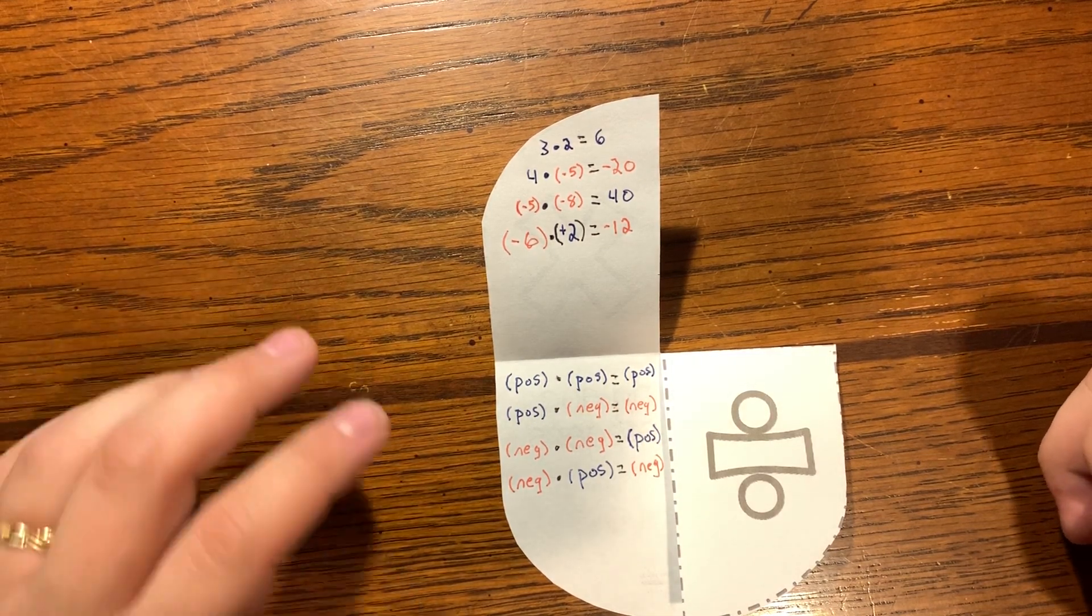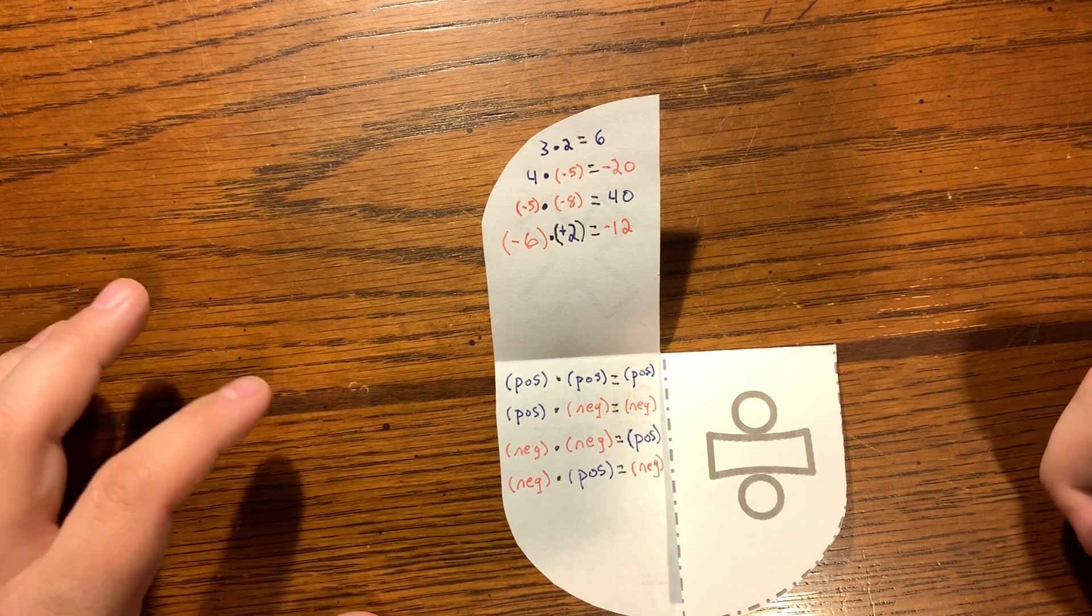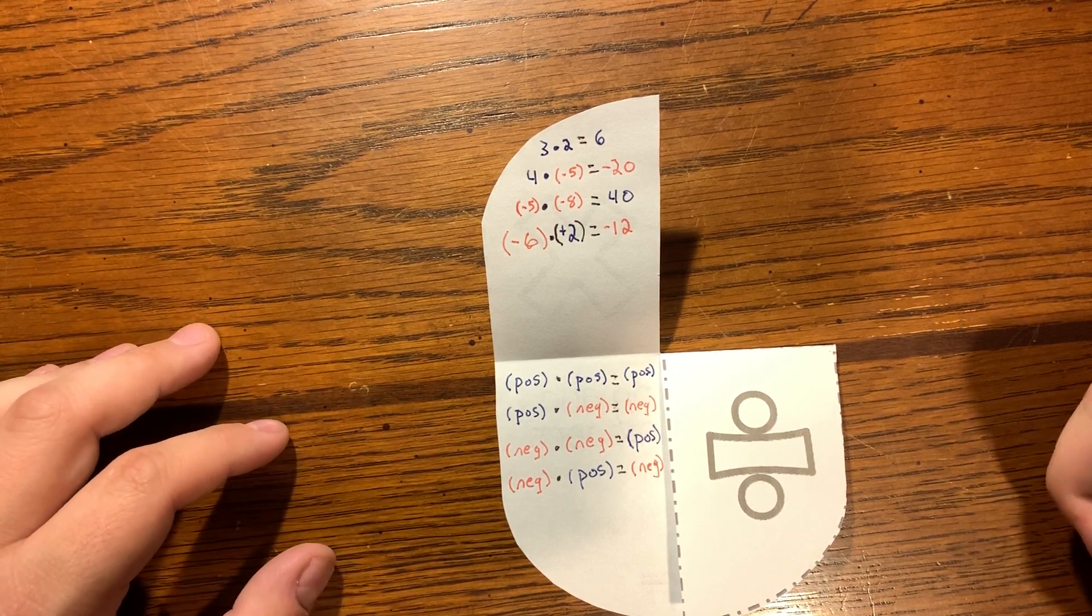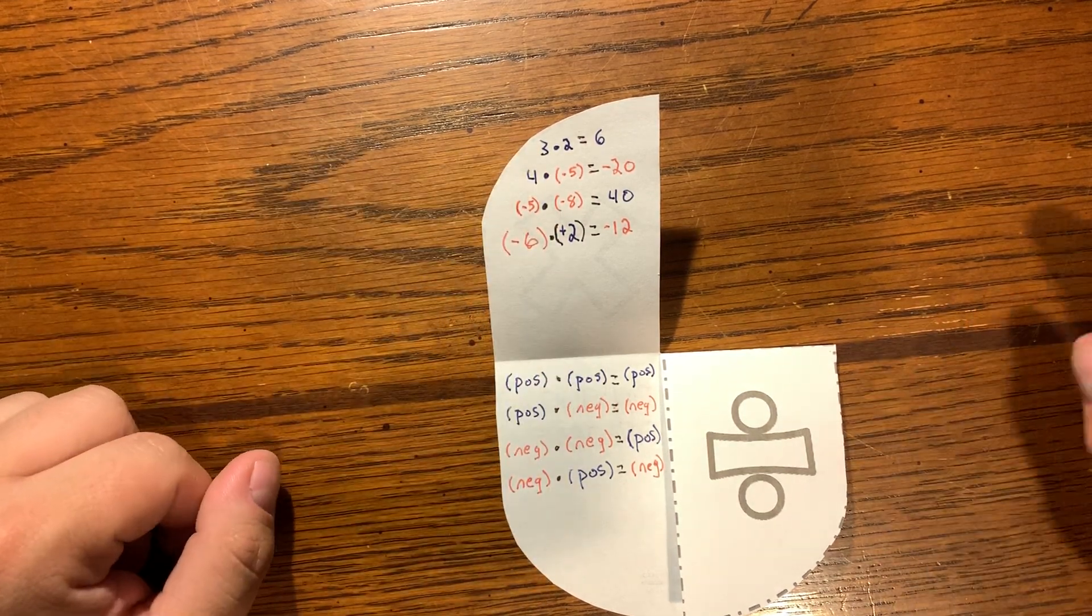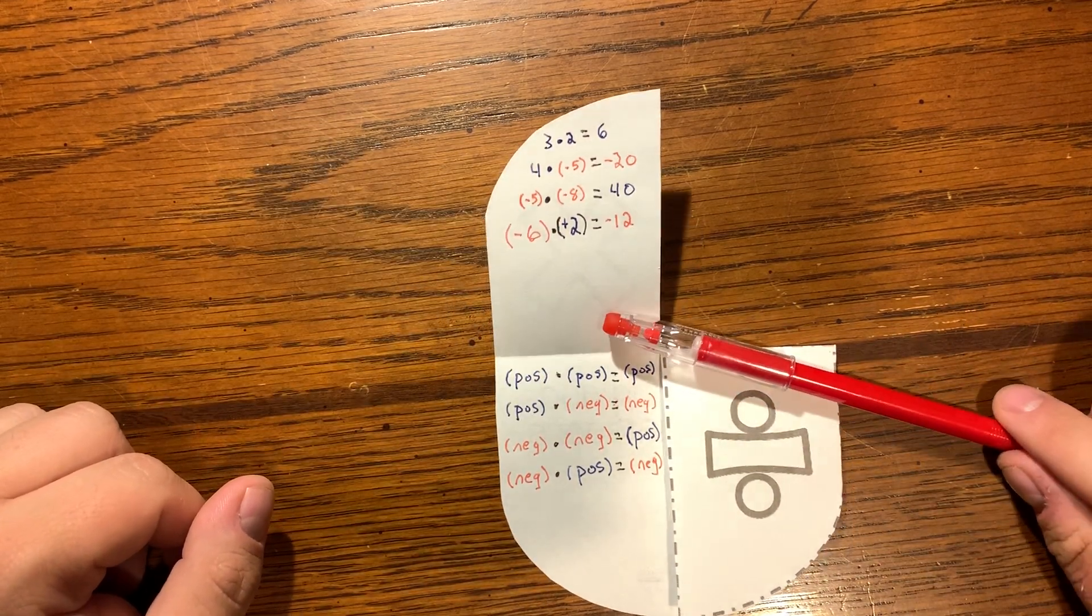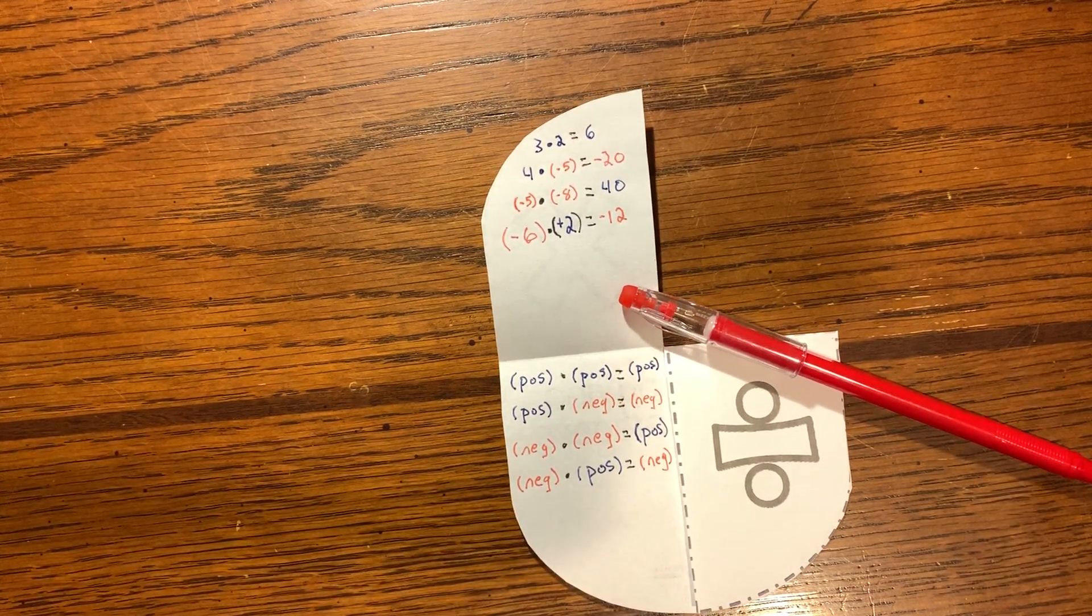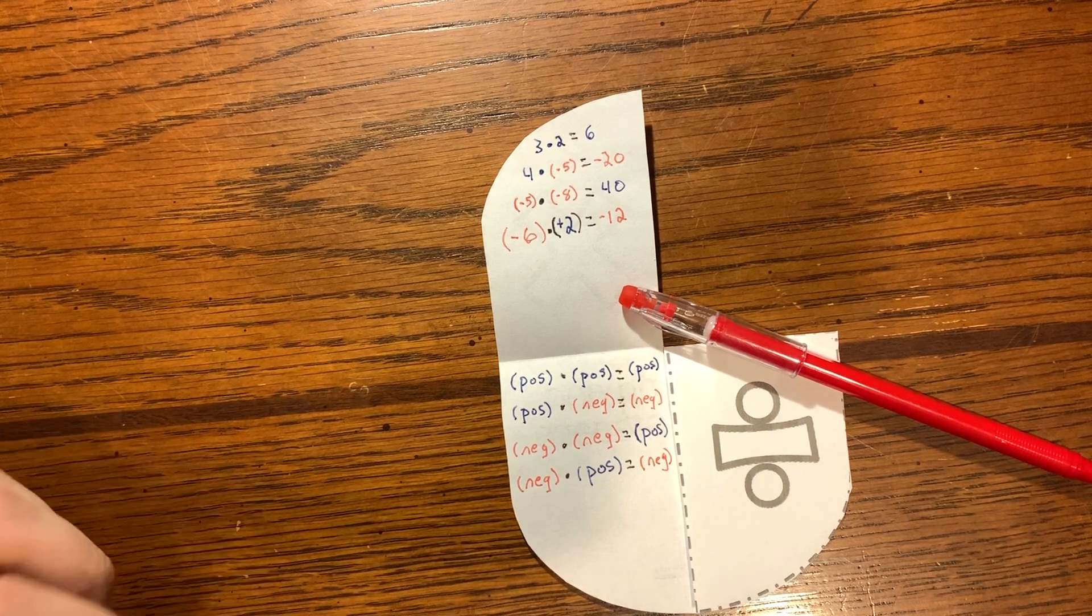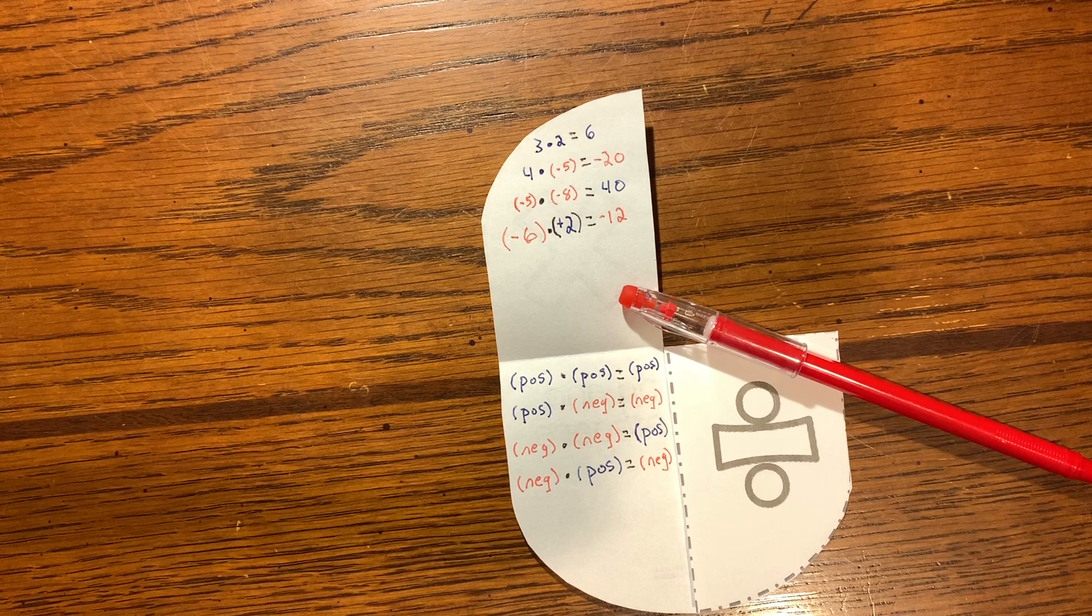First up, we have a positive number times a positive number that equals another positive number. For example, a positive 3 times a positive 2, that's going to give you a positive 6. Next, we have a positive number times a negative number. So when you do that, you get a negative value. So 4 times negative 5, for example, would give you negative 20.